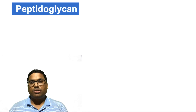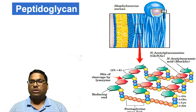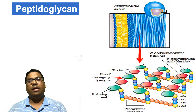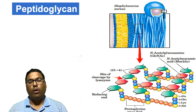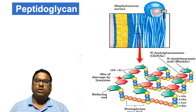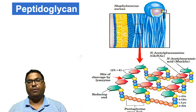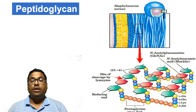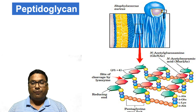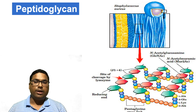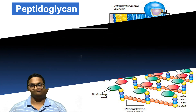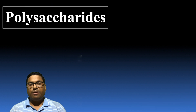Peptidoglycan consists of N-acetyl glucosamine and N-acetyl muramic acid linked with the glycosidic bond, and they also have a peptide bridge in between them. In this way they form the important peptidoglycan heteropolysaccharide present in the bacterial cell world. So in this way we have studied about the polysaccharides.